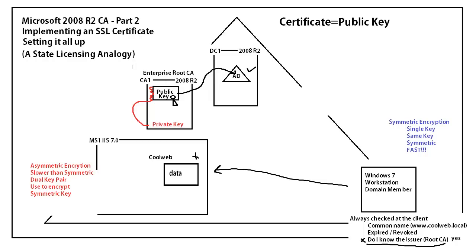We installed the Enterprise Root CA, and he has what is called a self-signed certificate. When you install that very first top-level root, he signs his own certificate with his own private key and embeds his own public key into that certificate. So that's very important. Also, we're going to be using a key pair on the web server. The key pair that we have on the server, bound to the website, is using what's called asymmetric encryption.